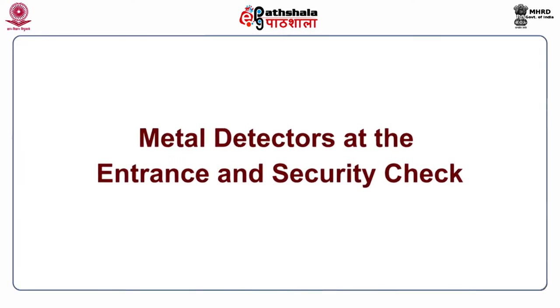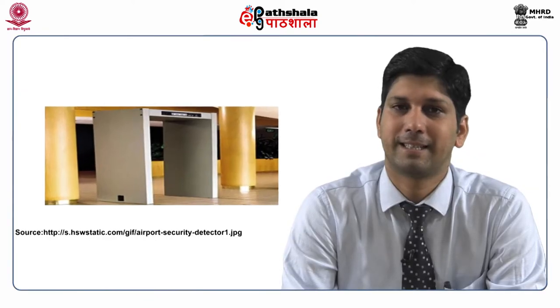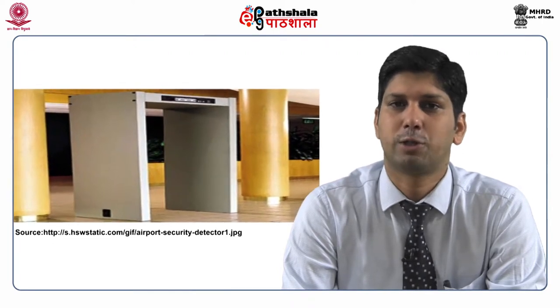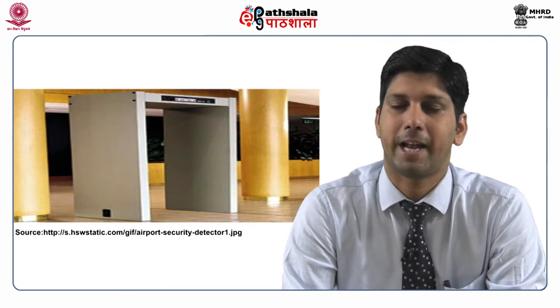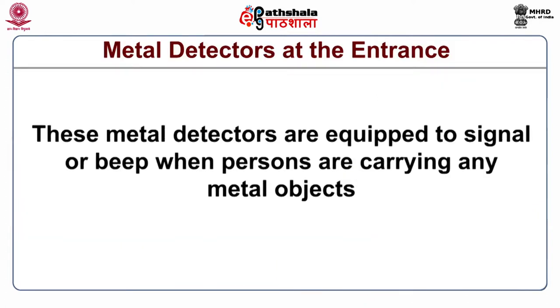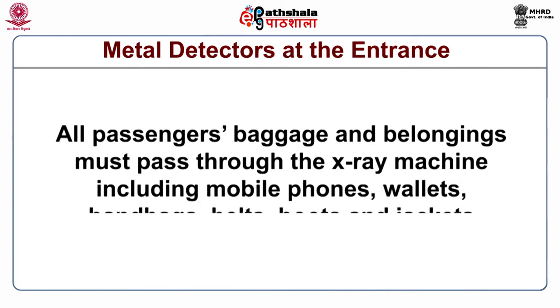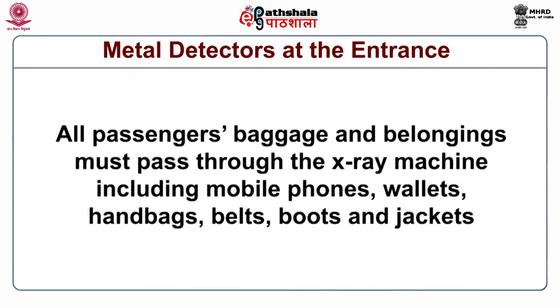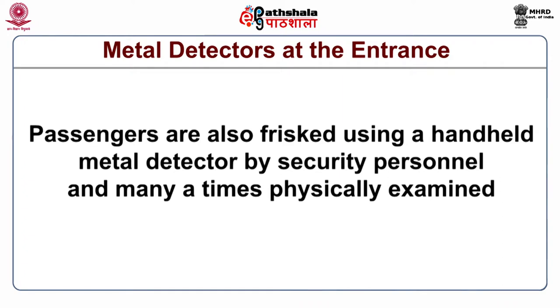Metal detectors at the entrance and security check: Every person entering the terminal is mandatorily made to pass through metal detectors placed at the entrance and during security checks. These detectors signal or beep when persons are carrying any metal objects. At the security check area, passengers' baggage and belongings — including mobile phones, wallets, handbags, belts, boots and jackets — must pass through the X-ray machine. Passengers are also frisked using a handheld metal detector by security personnel and may be physically examined. Once examined, passengers' boarding passes are stamped by the personnel.